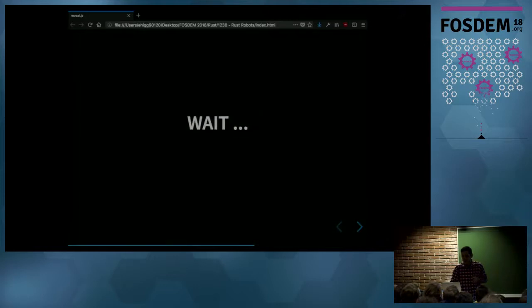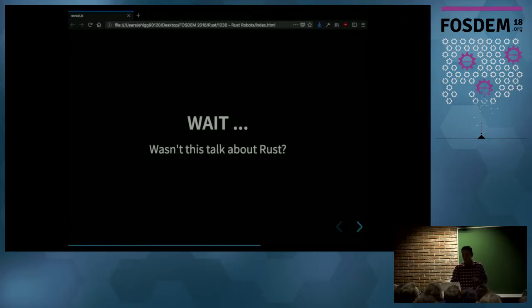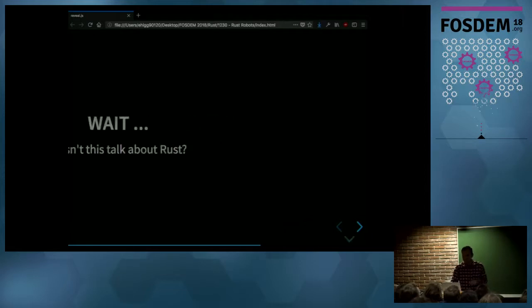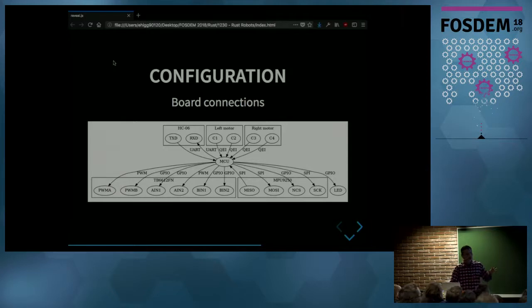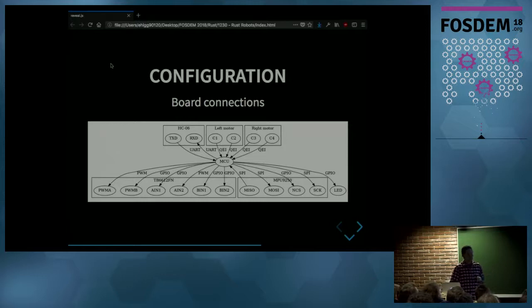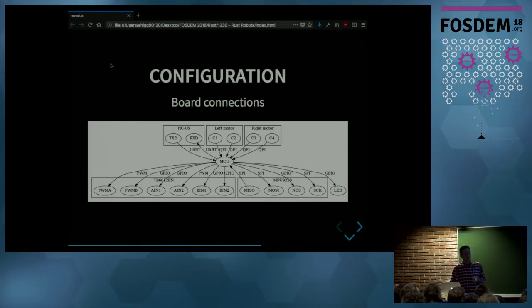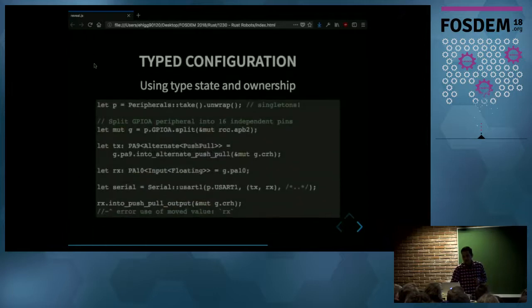At this point you might be wondering — wasn't this talk about Rust? Let's talk about how Rust helped build this application. In this diagram, you see the microcontroller in the center with external components connected via pins. Each edge in the graph is a microcontroller pin — its direction indicates input or output, and the label indicates its function. You want to configure everything correctly, otherwise the system will not work and you'll have a hard time figuring out what's wrong.